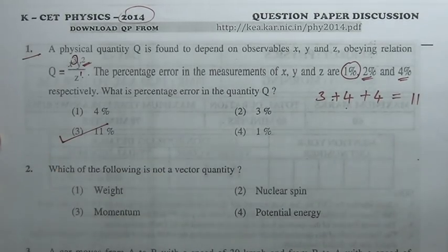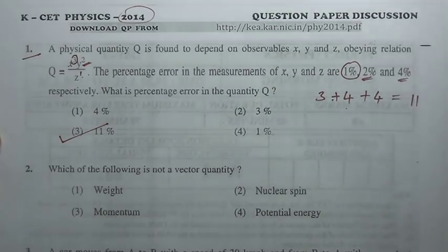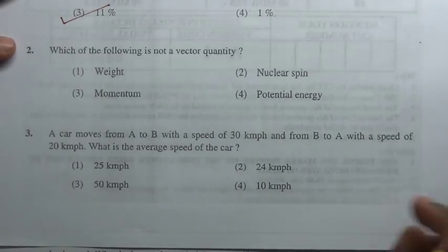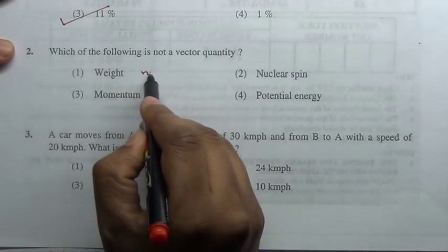Which of the following is not a vector quantity? Weight is a vector mg, nuclear spin is a vector, momentum mass into velocity is a vector, potential energy is a scalar quantity.